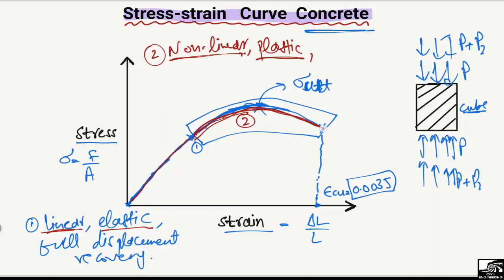And also we can call it incomplete recovery. Before it was full displacement recovery, meaning by removing the load from this stage our material can come back again exactly to the zero point. But in stage two we will have incomplete recovery, meaning the material will not recover to its original position as it was before.